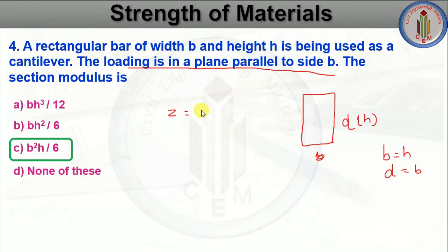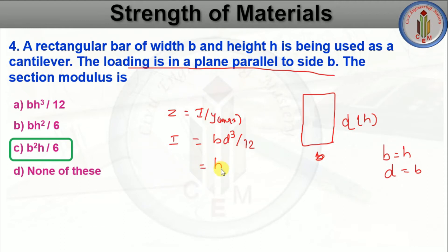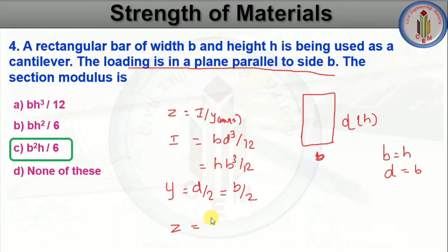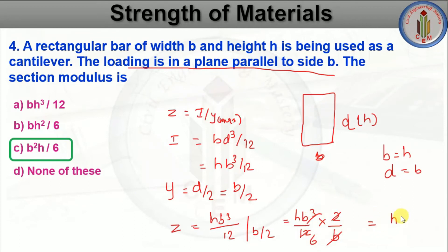Section modulus Z = I/Y_max. Substituting I = HB³/12 and Y = B/2: Z = (HB³/12) ÷ (B/2) = (HB³/12) × (2/B) = HB²/6, which can also be written as B²H/6. So the answer is B²H by 6.